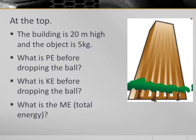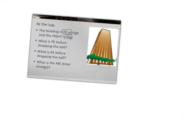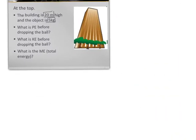Let's talk about something falling off a building. So at the very, very top of the building, before we release it, it's really easy to calculate potential energy. So we have a 20 meter high building and an object with 5 kilograms of mass. So let's answer the first question, what is potential energy before dropping the ball? Our knowns for this one: we know that H is 20 meters, we know that mass is 5 kilograms.